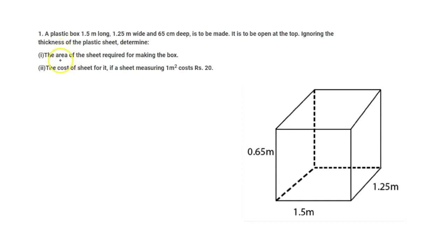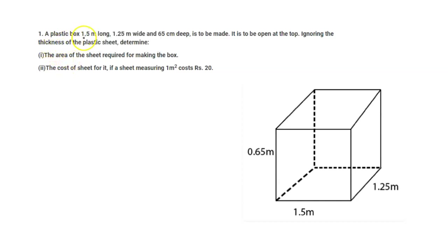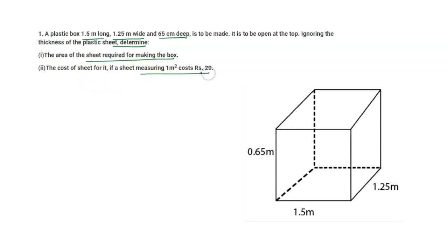Hello to everyone. Welcome back to my channel. Today's question is: a plastic box 1.5 meters long, 1.25 meters wide, and 65 centimeters deep is to be made. It is to be open at the top. Ignoring the thickness of the plastic sheet, determine the area of the sheet required for making the box and the cost of the sheet if 1 square meter costs rupees 20.